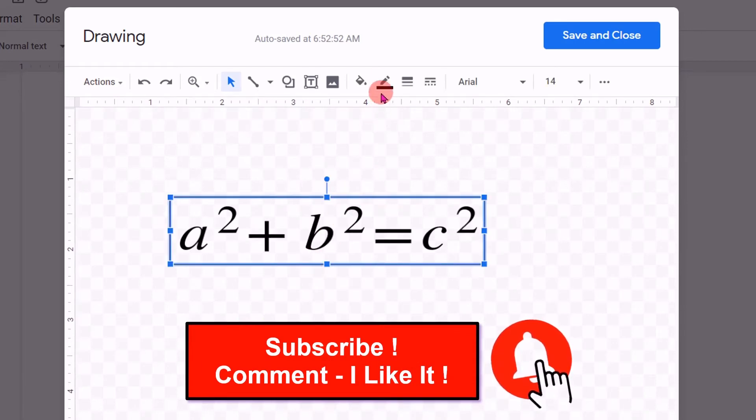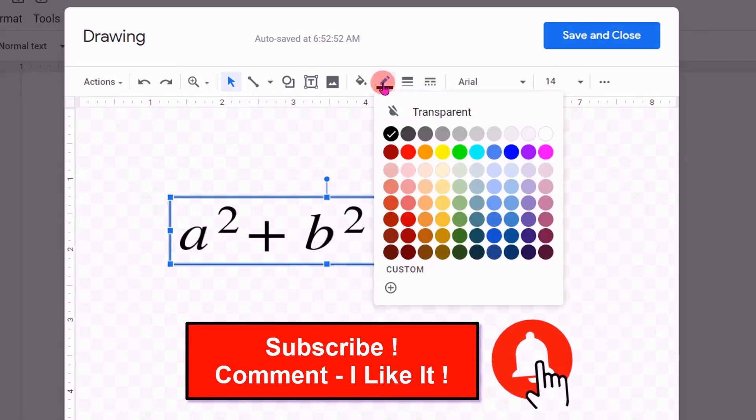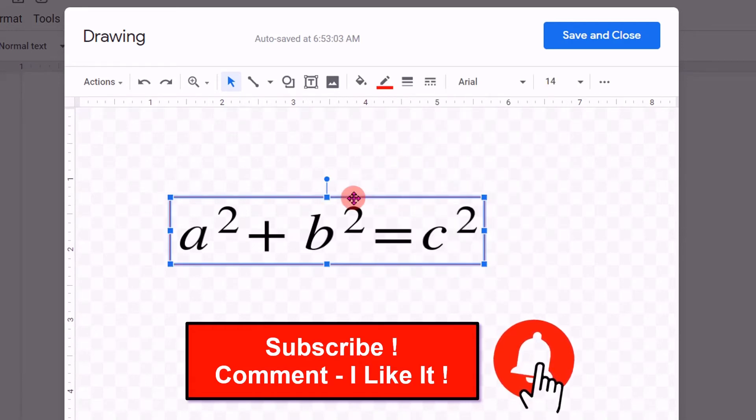If you want to change the border color, click on border color and select the color of your choice. The border color will change.